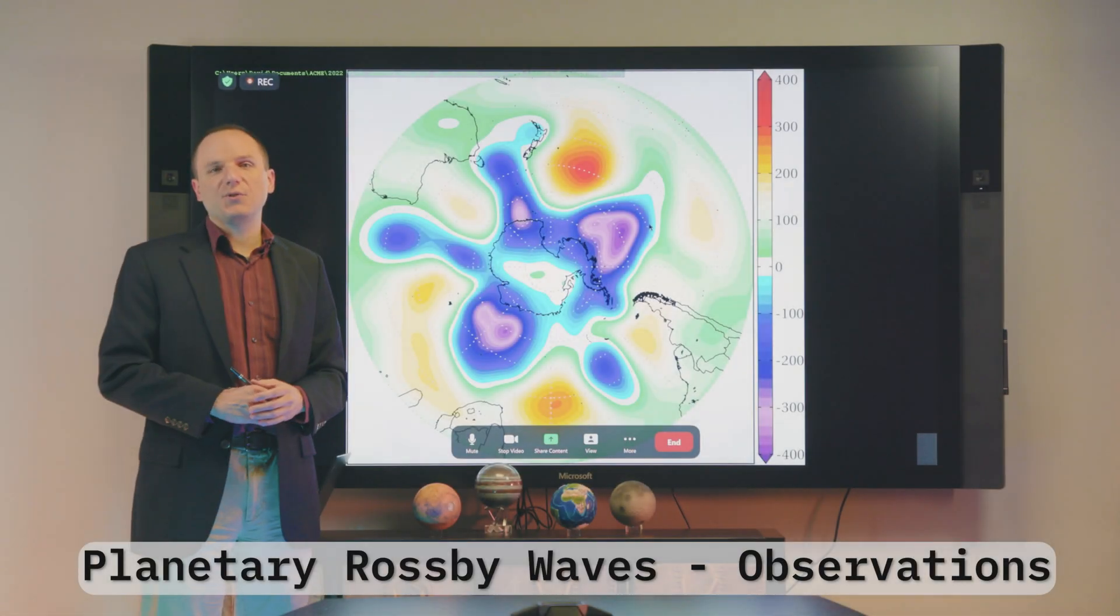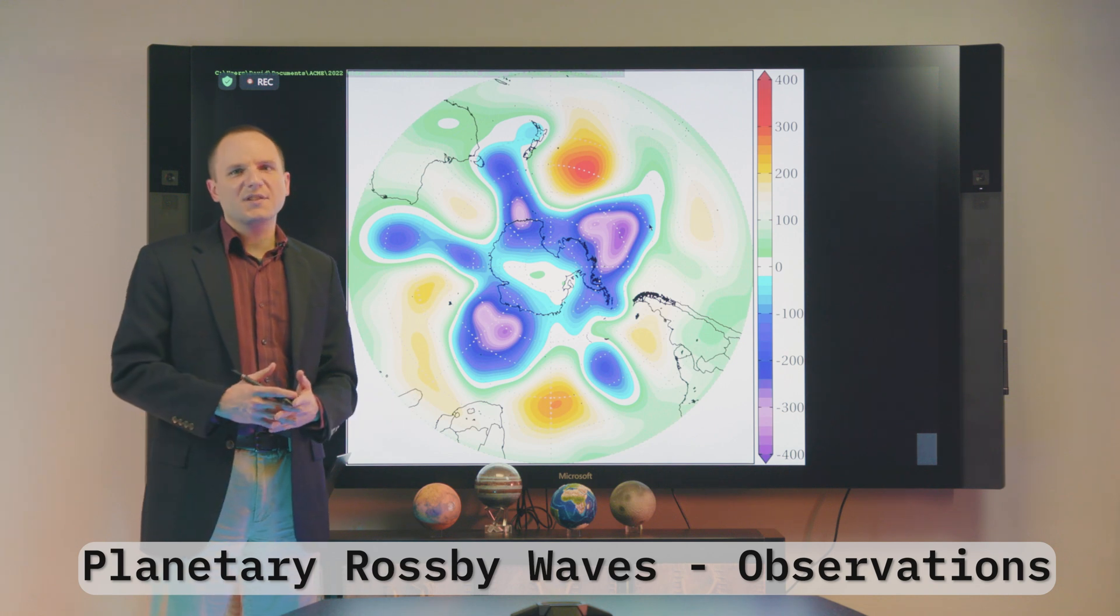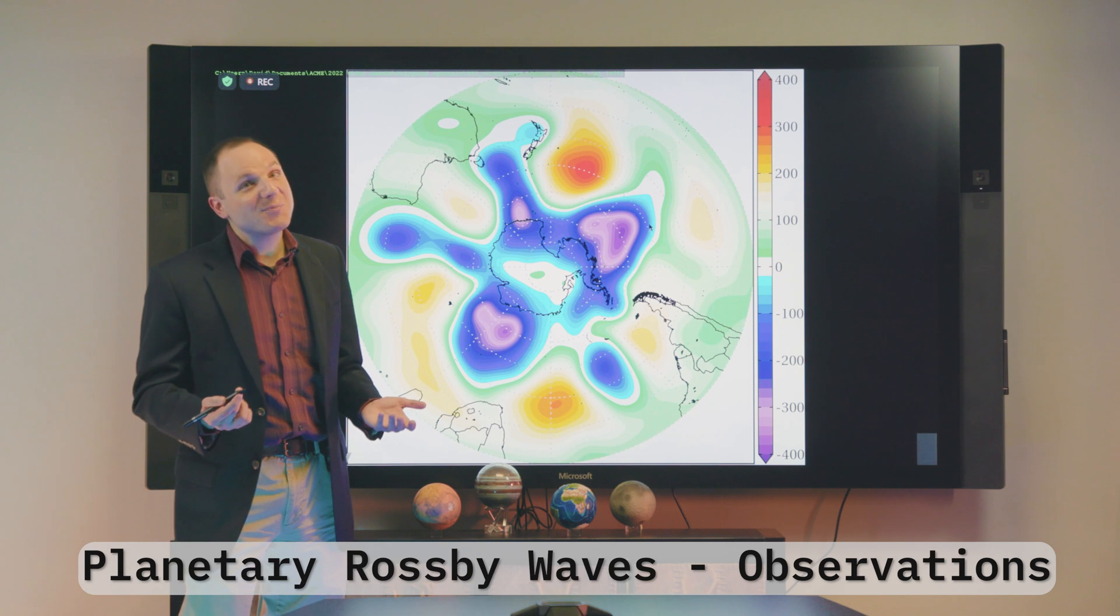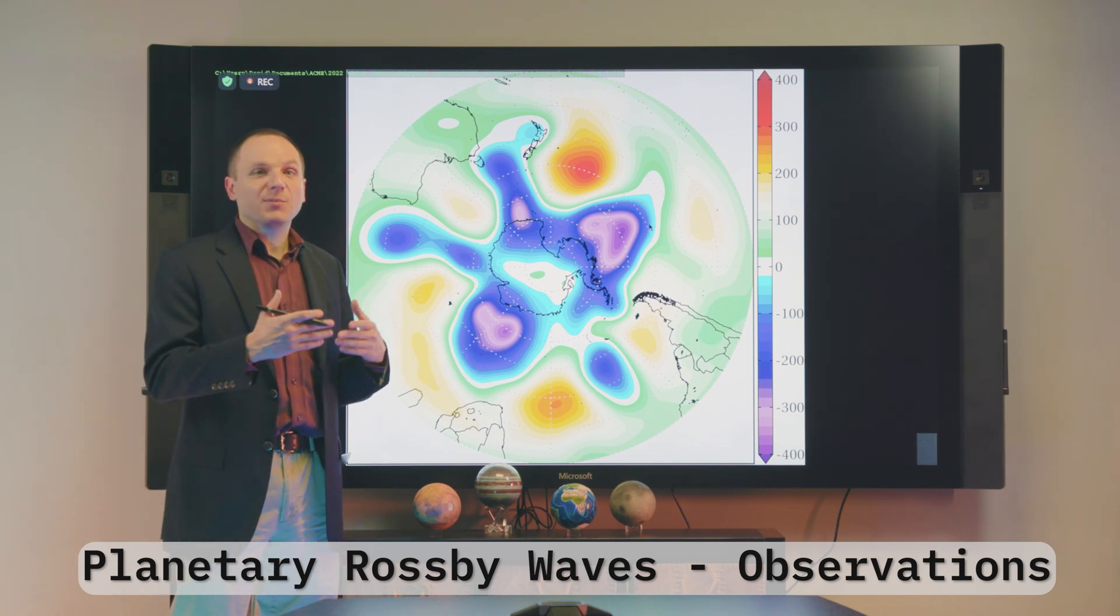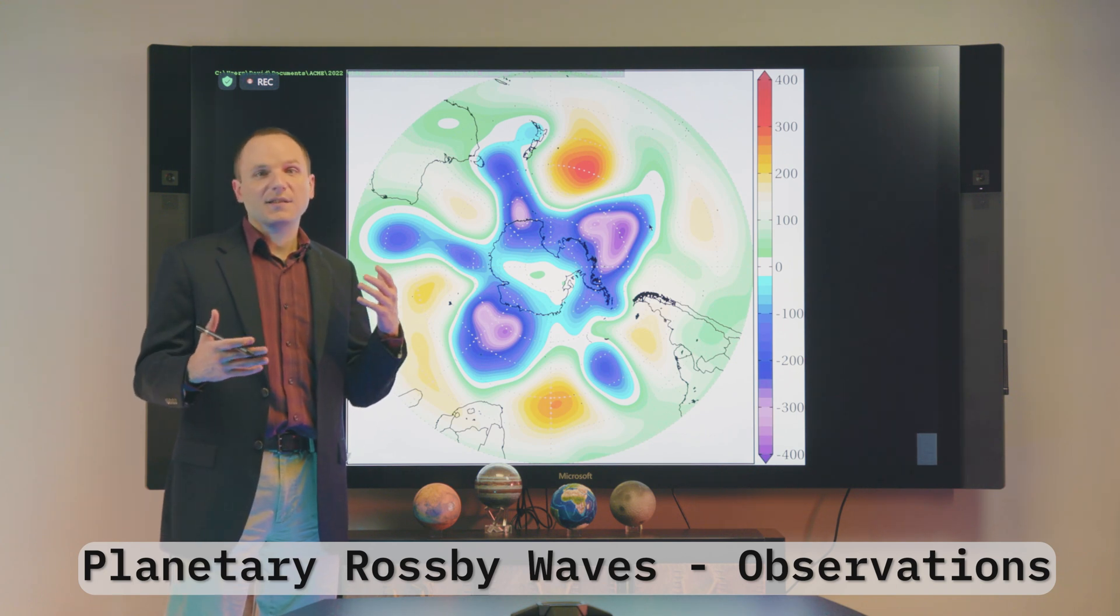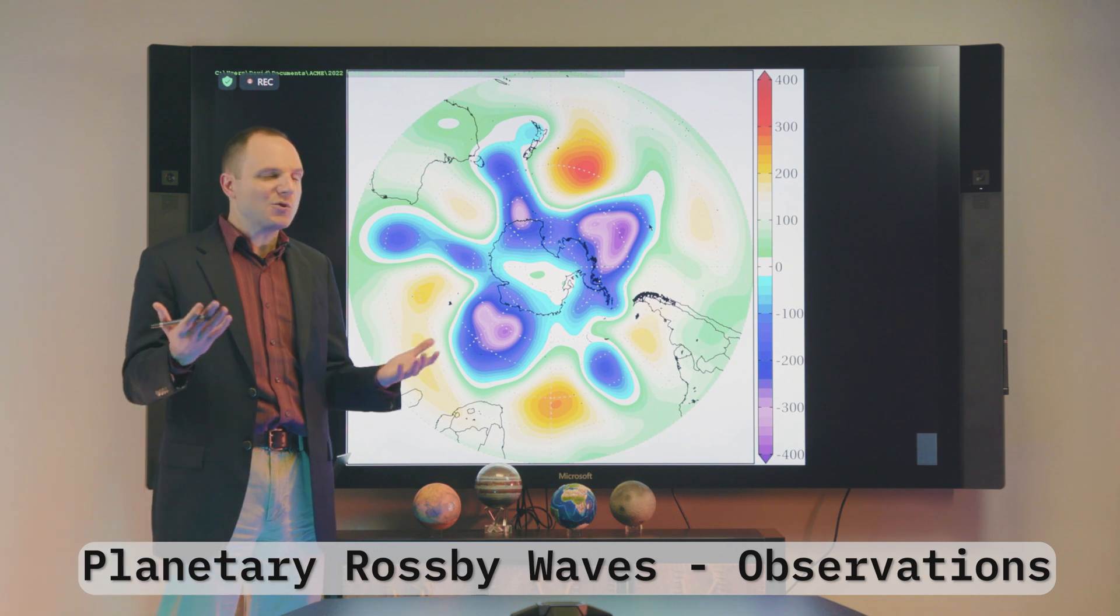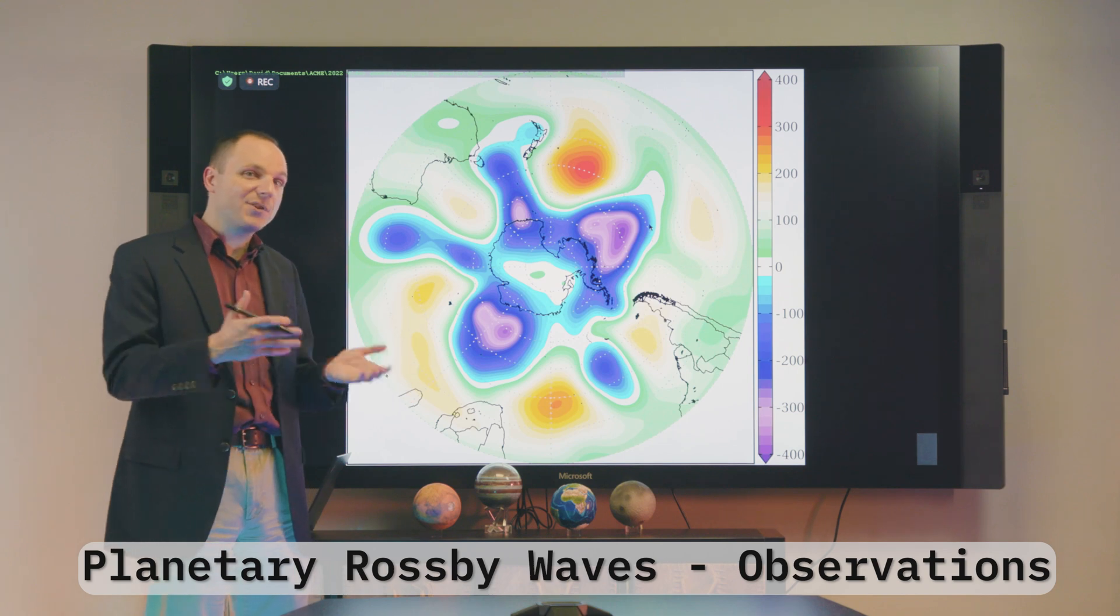So I told you that polygonal eye walls are caused by mesovortices. But where do these mesovortices come from? And the answer is something called vortex Rossby waves. Now, I know it's a mouthful. And in this context, vortex just means a hurricane. But the Rossby wave is something else we have to talk about in the context of a broader atmospheric phenomenon. And Rossby waves are something that you probably have dealt with in your day-to-day or week-to-week weather lives, when there's a high pressure or low pressure. So to demonstrate this, we're going to take a look at the southern hemisphere, the geopotential height anomalies at 500 millibars over Antarctica.